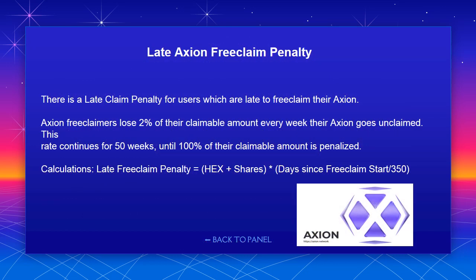Late Axion free claim penalty: there is a late claim penalty for users who are late to free claim their Axion. Free claimers lose 2% of their claimable amount every week their Axion goes unclaimed. This rate continues for 50 weeks until 100% of their claimable amount is penalized. The calculation is: late free claim penalty = (HEX shares) × (days since free claim start / 350).